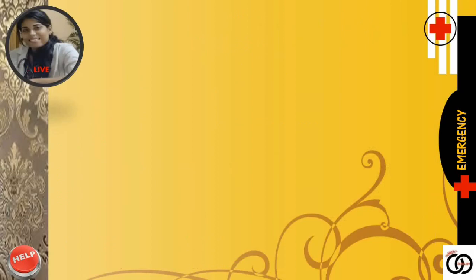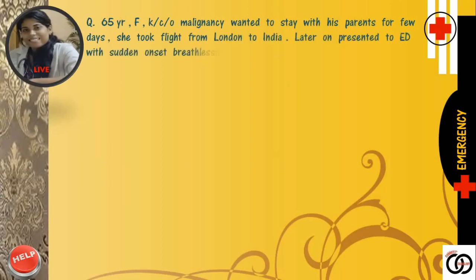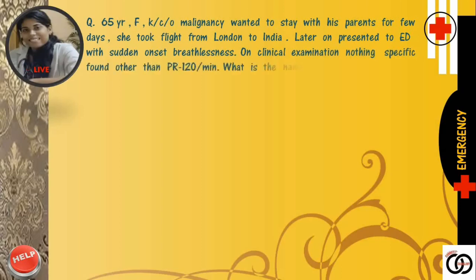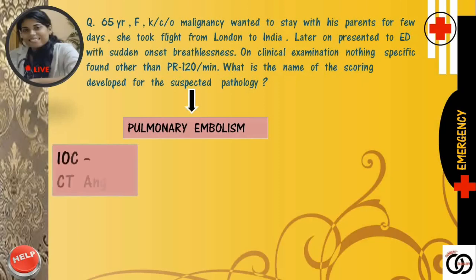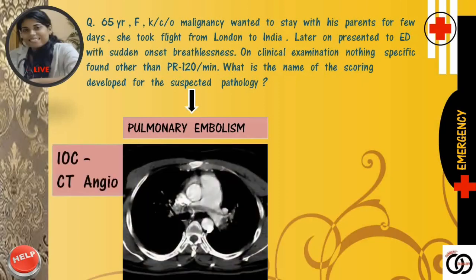Moving forward, the next question: A 65-year-old female, known case of malignancy, took a flight from London to India. Later on, she presented in the emergency department with sudden onset breathlessness. On clinical examination, nothing specific found other than pulse rate of 120 per minute. What's the suspected pathology? A female patient with hypercoagulable state took a long distance flight, presented with dyspnea and tachycardia, and auscultation also nothing specific found. Pulmonary embolism is suspected. The investigation of choice for pulmonary embolism is CT angiography. See the scan of this patient — can you appreciate the saddle-shaped embolus sitting at the bifurcation of the main pulmonary artery?